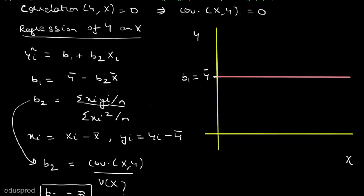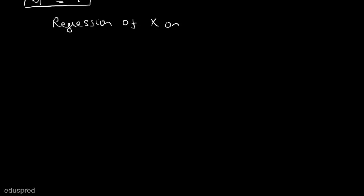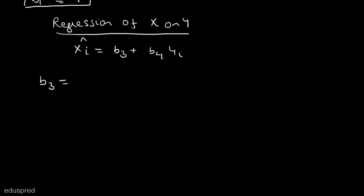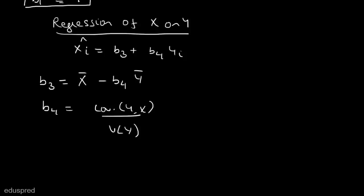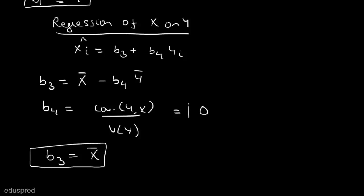Now let's talk about the regression of x on y. The sample regression function is: x̂ᵢ = b3 + b4·yᵢ, where xᵢ is the dependent variable and yᵢ is the independent variable. Using OLS, b3 = x̄ − b4·ȳ, and b4 = covariance between y and x divided by the variance of y. Since covariance between x and y is zero, b4 = 0 and therefore b3 = x̄.